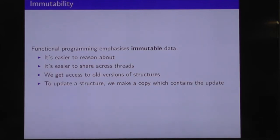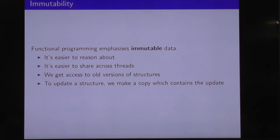With this functional programming thing, we like to use immutable data. And that gives us certain properties. Immutable data is generally easier to reason about, so we don't have crazy global variables that are changing and altering the performance of things in other corners of the system. It's also easier to share immutable data across multiple threads, because nobody can go in and make a modification to anyone else's data.